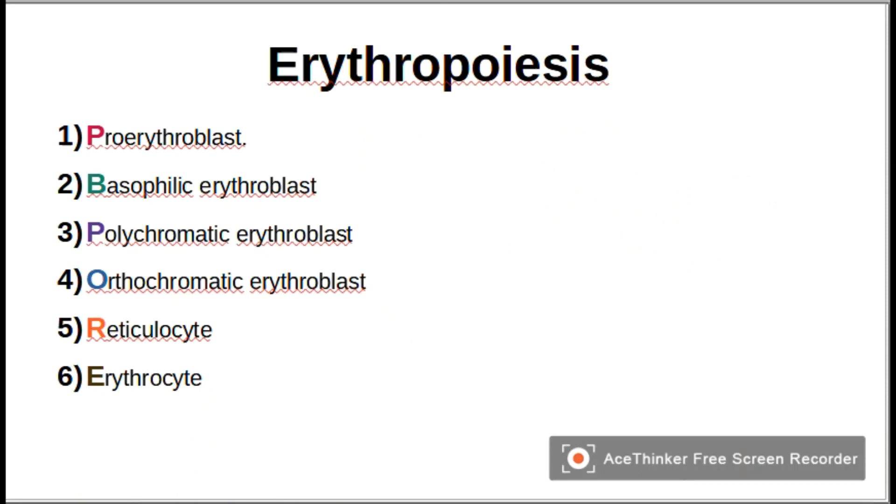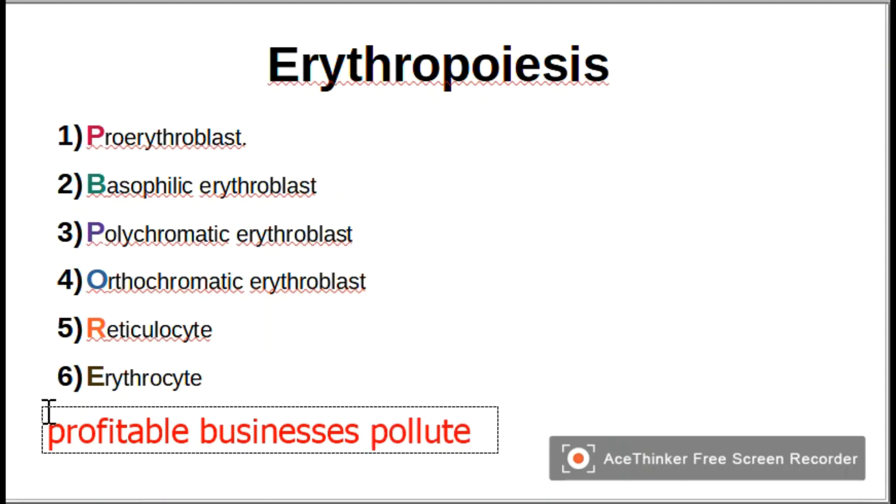So now I give you a mnemonic to remember the stages of erythropoiesis. The mnemonic is: Profitable Businesses Pollute Our Rural Environment.